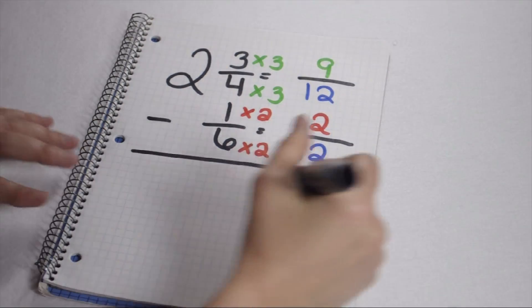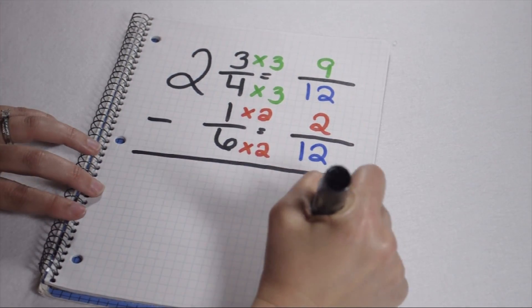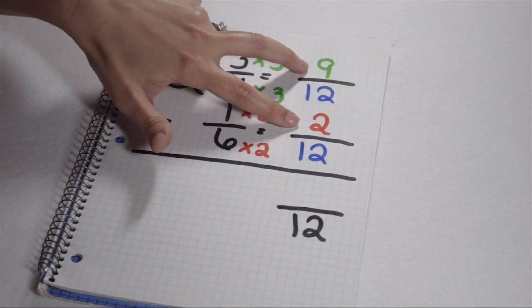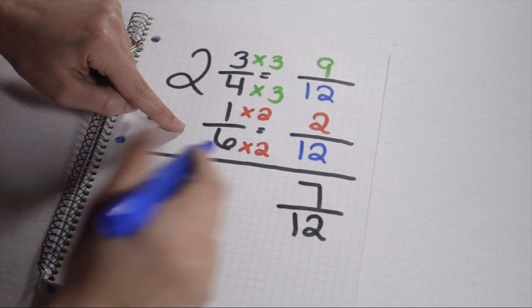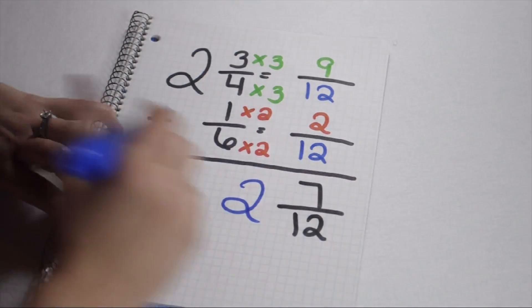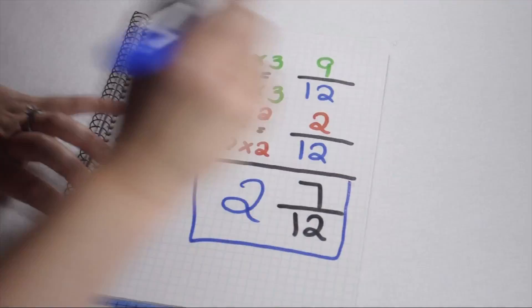We know the denominator in our solution is going to be 12. I can now subtract my numerators. 9 minus 2 gives me 7, and on my whole numbers, 2 take away nothing leaves me with 2. This means my final solution comes out to be 2 and 7 twelfths.